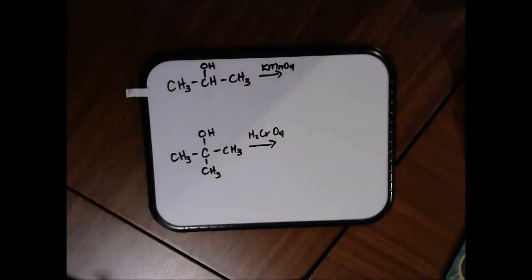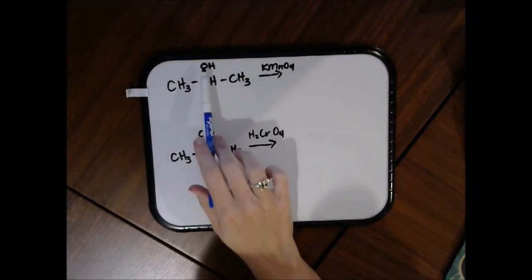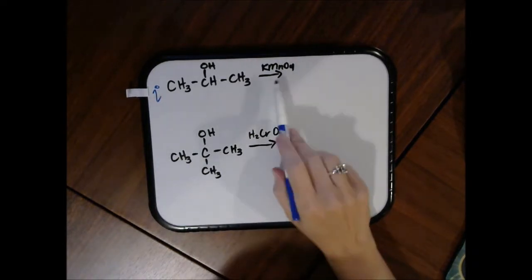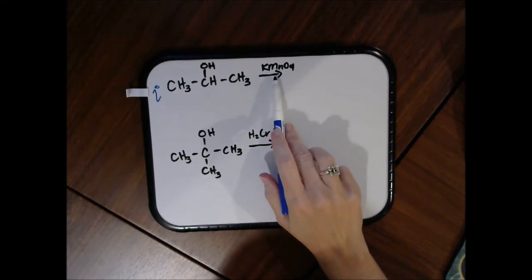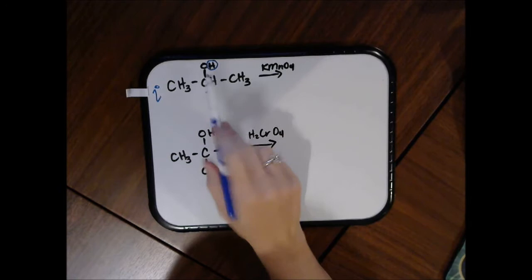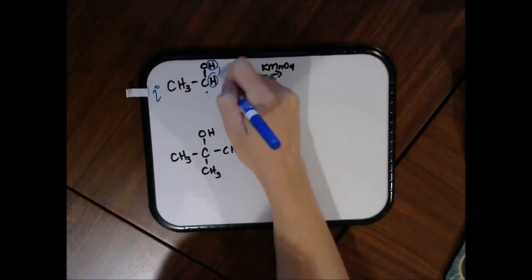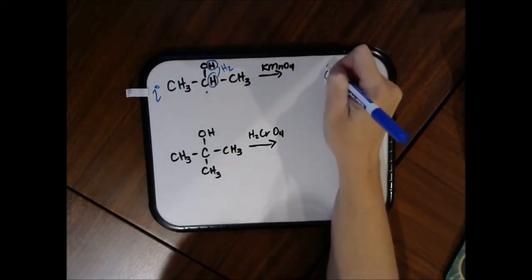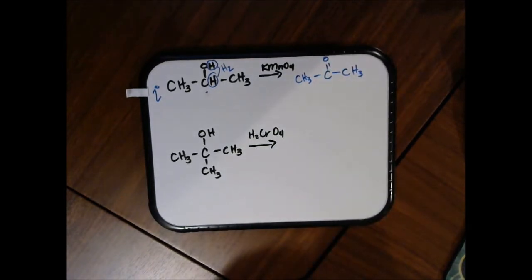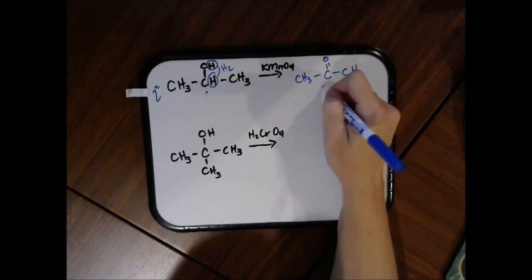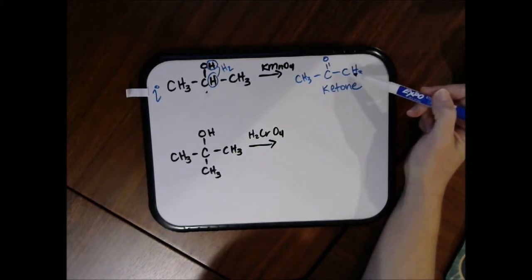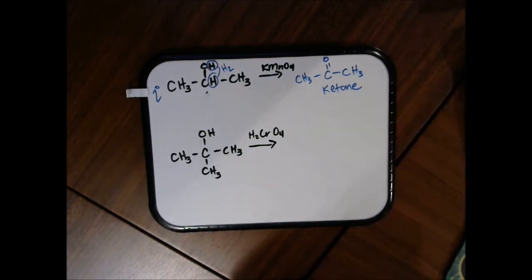What happens with a secondary alcohol? The hydroxide group is bonded to a carbon that is bonded to two other carbons. Using potassium permanganate as a mild oxidizing agent, one hydrogen comes from the hydroxide group and the other comes from the carbon attached to it. Those are eliminated together, and the carbon-oxygen forms a double bond. The product still has two methyl groups on both sides — this is a ketone, which has a carbon-oxygen double bond with alkyl groups on both sides rather than a hydrogen. Ketones do not further oxidize, so that reaction is done.